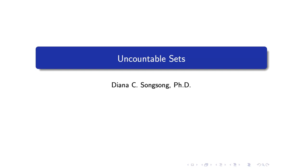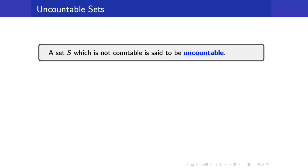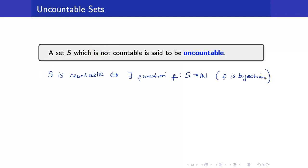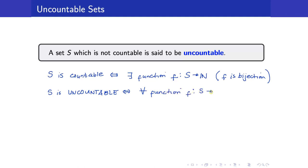We have now arrived at the last lesson of this course: uncountable sets. A set is uncountable if it is not countable. Recall that a set is countable if and only if there exists a bijection f from s to the set of natural numbers. The negation of this is: for every function f from s to the natural numbers, f is not a bijection. So to show a set is uncountable, we need to show that every function from that set to the natural numbers is not a bijection.